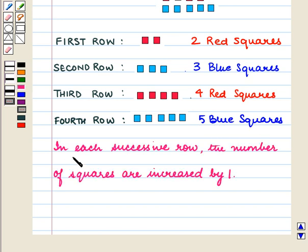So we observe that in each successive row, the number of squares is increased by 1. That is, the number of squares are in the sequence 2, 3, 4, 5, and so on. Also,